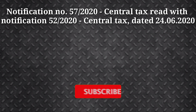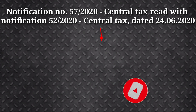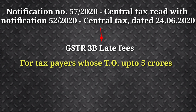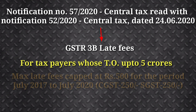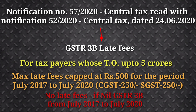Notification 57, deemed to be in effect from 25th June 2020, read with Notification 52, deals with late fees. For taxpayers whose turnover is up to 5 crores, the maximum late fees for GSTR 3B from July 2017 to July 2020 is capped at 500 rupees including CGST and SGST. There are no late fees for Nil GSTR 3B filing for July 2017 to July 2020.